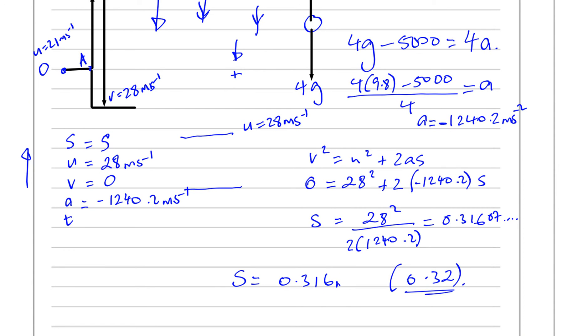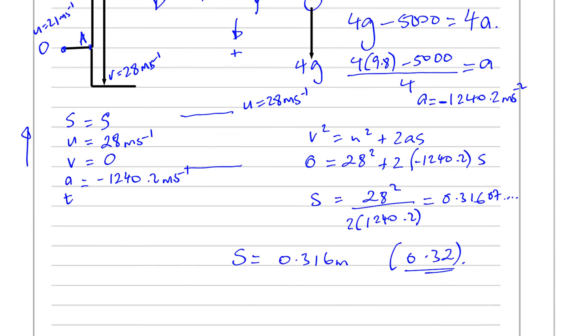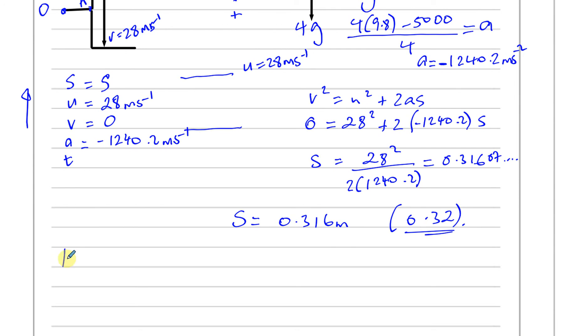So, that's 0.316, let's see the wording of the question. Find the vertical distance that P sinks into the ground before coming to rest. So, it's best to write, it sinks 0.316 meters, or 0.32 meters, before coming to rest.